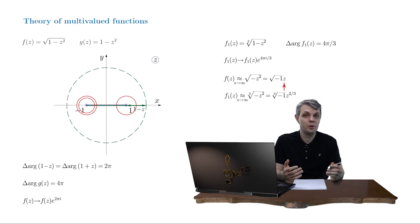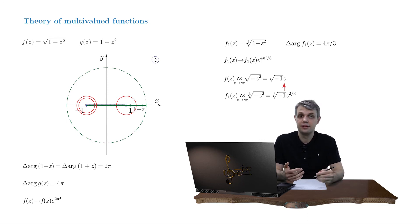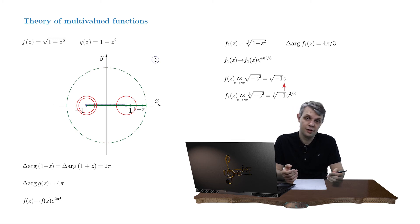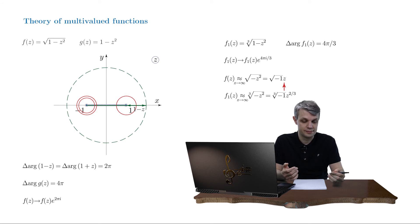So now you have two ways to check if a branch cut renders the function single-valued — use them at your convenience. Now let's fixate the regular branch of our original function, the square root, and make some calculations.